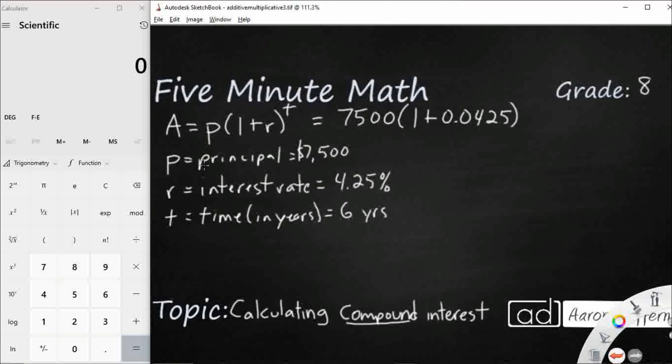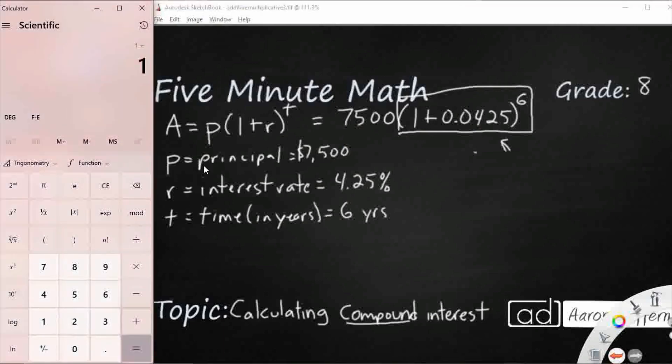Look what we've got to do. We've got to raise that to the t power, so to the sixth. So with our order of operations, we actually take care of this first. Then we multiply by 7,500, which is why we need our calculator here. So first, let's figure out what this looks like right here. Let's take care of that first. So 1 plus 0.0425, that's obviously going to be 1.0425.